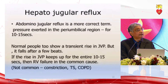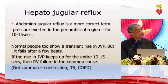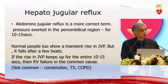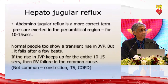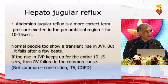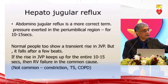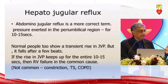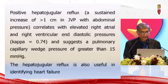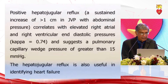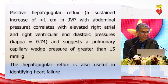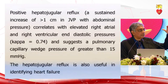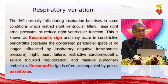You press on the abdomen and the JVP stays elevated for 10 full seconds — one, two, three, four, five, six, seven, eight, nine, ten. If the JVP is elevated at that level it is the hepatojugular reflex, indicating right-sided dysfunction. If you press and the JVP goes up by more than one centimeter, it is a positive hepatojugular reflex.